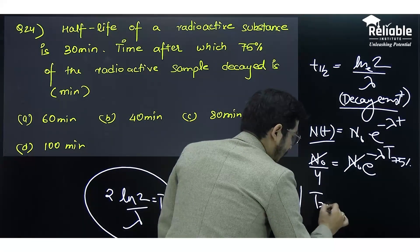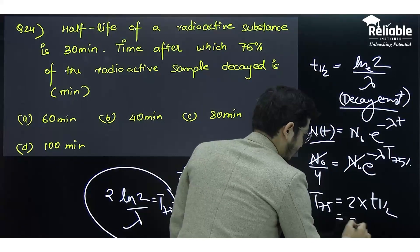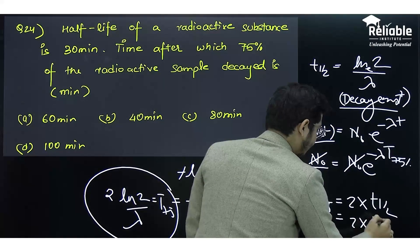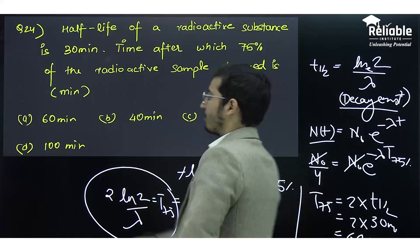t_75% is twice the half-life. Half-life is given as 30 minutes, so the answer is 60 minutes. Thank you.